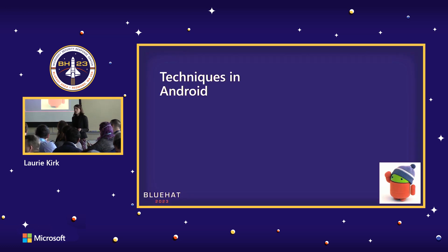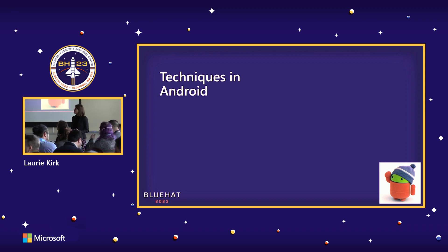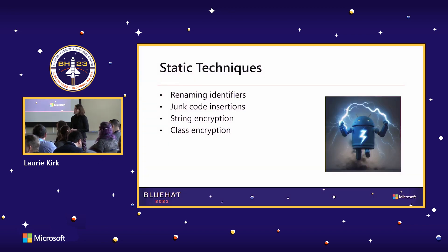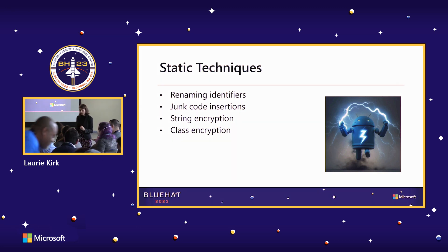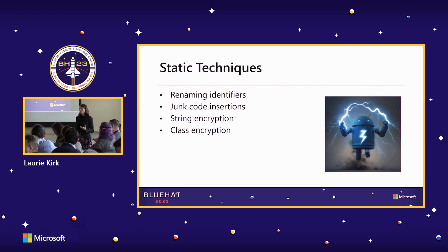Now that we've covered offensive and defensive reasons for Android obfuscation, let's go into the actual techniques employed. First, there are basic static techniques visible on disk when decompiling the application. One is renaming identifiers — not just for optimization, but to actually rename variables to misleading names or create junk variable names to obscure the application when a reverse engineer is examining it.